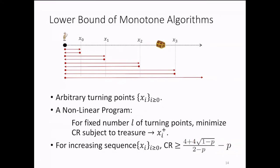we can consider the problem of minimizing the competitive ratio, subject to that the treasure is placed only arbitrarily close to the first l many turning points. Now, this gives rise to a nonlinear program on variables, the competitive ratio and the l of the turning points. And the idea then is to show that for a big enough l, the value of that nonlinear program is at least the competitive ratio we derived in the positive result.